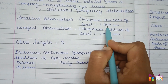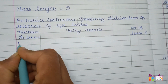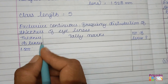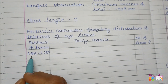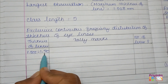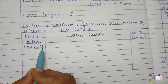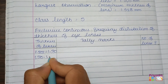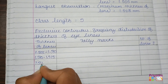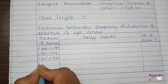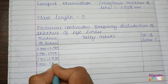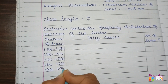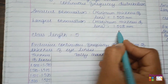The minimum class starts at 1.505. Since the question specifies a class length of 5, making a distance of 5 gives 1.510. As we are making an exclusive distribution, the number 1.510 will repeat in the next line: 1.510 to 1.515, 1.515 to 1.520, 1.520 to 1.525, and 1.525 to 1.530. The maximum observation of 1.528 is covered in this last class.